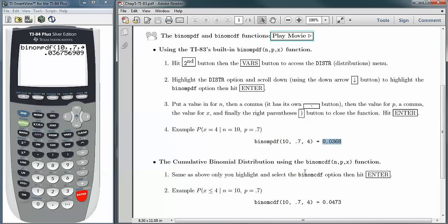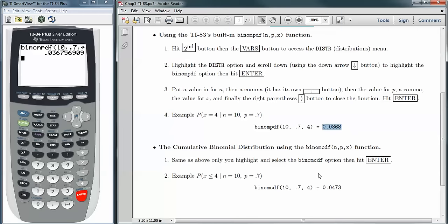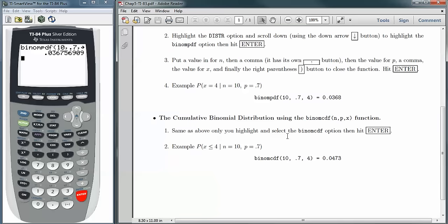Now there are times when you may want to get a cumulative probability. And for that, we use the BINOMCDF. That stands for the Binomial Cumulative Density Function. The usage is basically the same. But what it does is instead of finding a single probability, it finds the probability of getting a given number of successes or less.